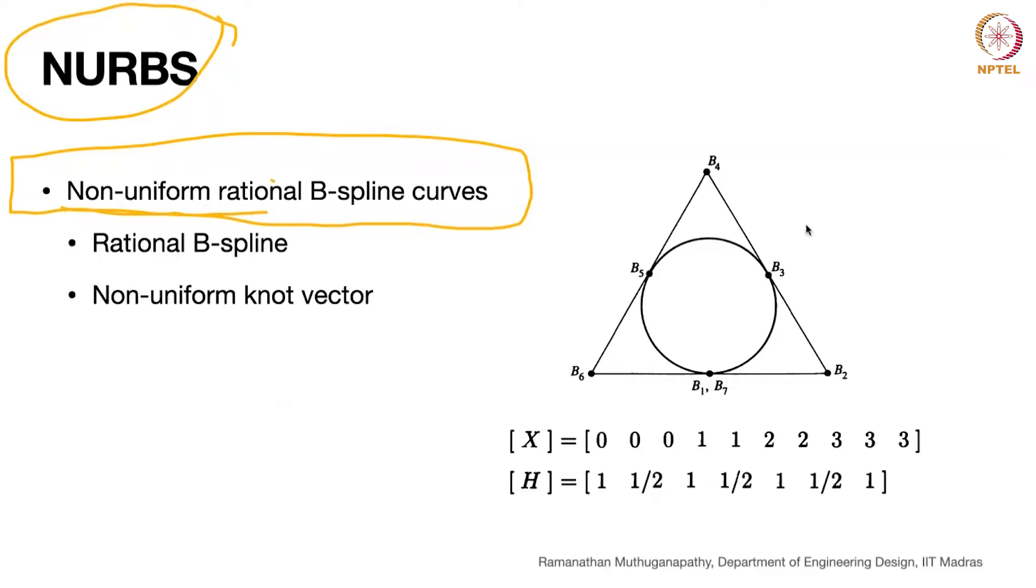Rational B-spline means you can add weight to each of the control points. So if I have B naught, then there is a H naught, I can add some weight. For example, if I have control point B naught and then put a H1, using this weight I can pull the curve close to control point B1. That is the idea of a rational B-spline.